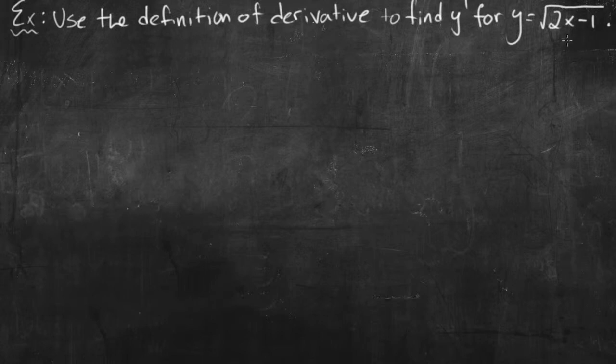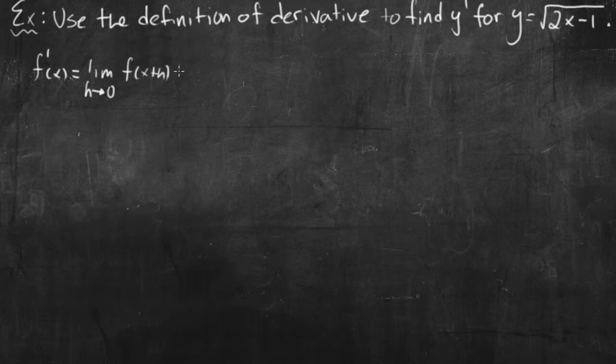So I'm going to use the definition of derivative. For those of you who are doing calculus right now, you've probably seen this definition a few times. The definition of derivative is that f prime of x, which is the same as y prime, is equal to the limit as h goes to 0 of f of x plus h minus f of x, all divided by h. I use h, though you could use delta x.